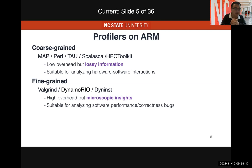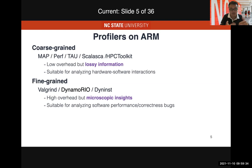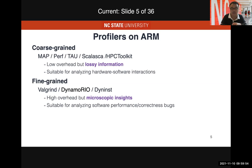There is another type known as fine-grained analysis tools. Representative tools like Valgrind, DynamoRIO, and Dyninst can all work on ARM. They can monitor individual instruction execution of any program. Because they instrument every instruction, their overhead can be pretty high, but they provide microscopic insight with no loss of information. They are more suitable for analyzing software performance and tracking issues like data races and memory corruption.